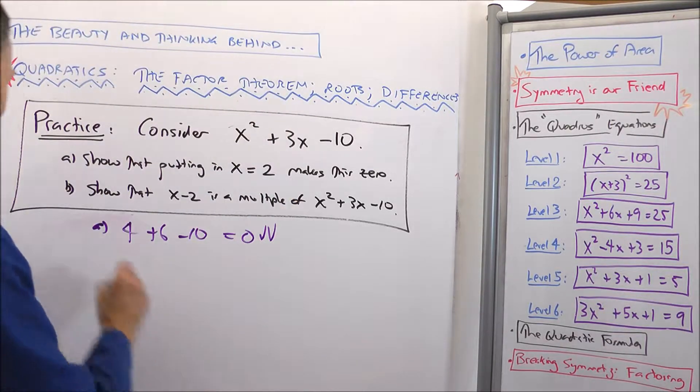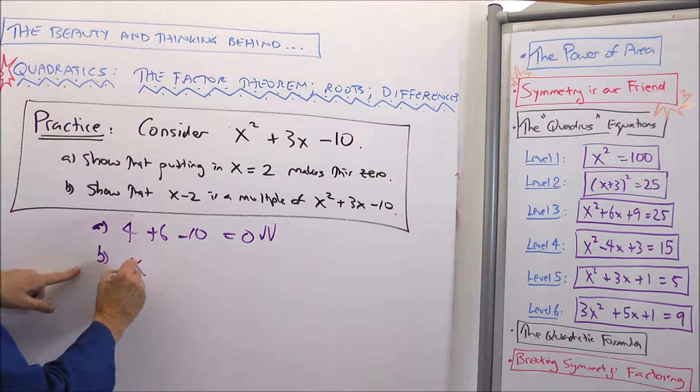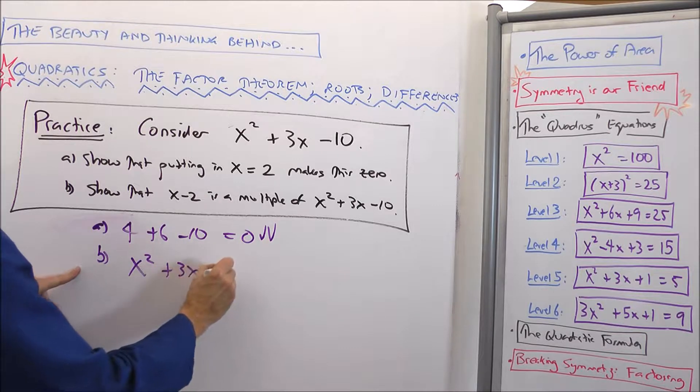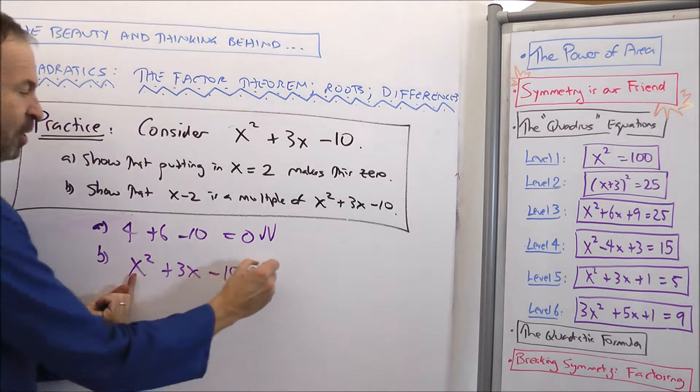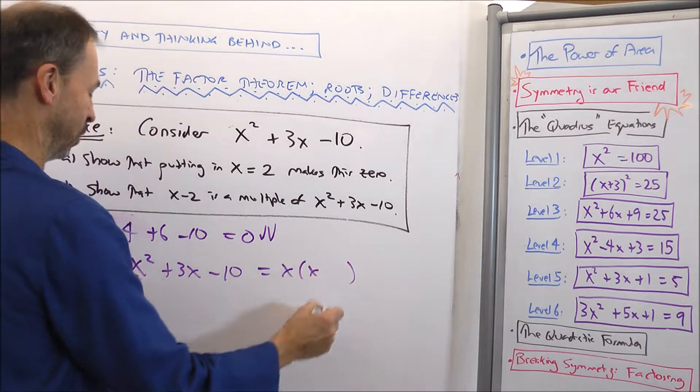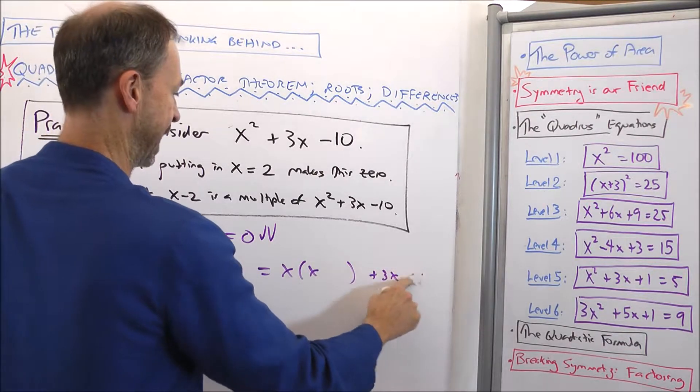Alright, let's see. So let me write this as a multiple of x minus 2. So I've got x² + 3x - 10. First term, it's a multiple of x, that's for sure. And the rest of it 3x minus 10.